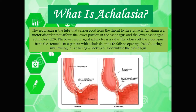The lower esophageal sphincter is a valve that closes off the esophagus from the stomach. In patients with achalasia, the LES fails to open up or relax during swallowing, and thus it causes a backup of food within the esophagus. In the picture at the bottom you can see the esophagus and the stomach — this is the tube that carries the food to the stomach, and just at the junction where the esophagus meets the stomach we have this lower esophageal sphincter.